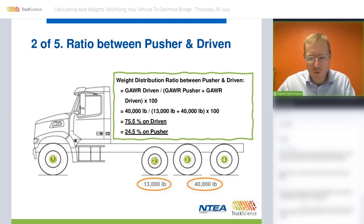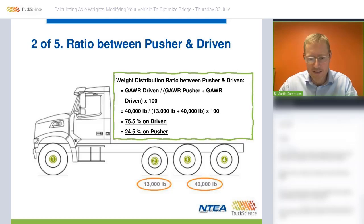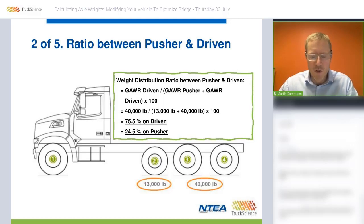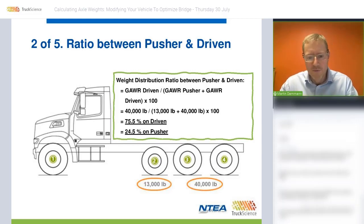This gives us just over 75.5% of the weight on the driven axles and roughly 25% on the pusher axle — controlled by the desired weight mentioned earlier. Typically the desired weight is the same as the gross axle weight rating, or can be slightly less if we want to limit the weight carried by the pusher axle. These slides will also be included in the recording, which will allow you more time to look at the details of the formulas.